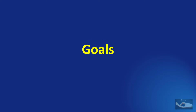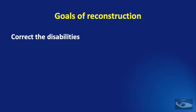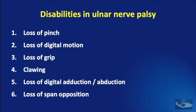Let us now look in detail at the goals of management. As stated, the goal is simply to correct the disabilities that arise in Ulnar Nerve Palsy. It is not just the paralysis of individual muscles that we are concerned with, but the disabilities caused by that paralysis. There are six main disabilities in Ulnar Nerve Palsy, and understanding these disabilities helps us understand how they need to be corrected.